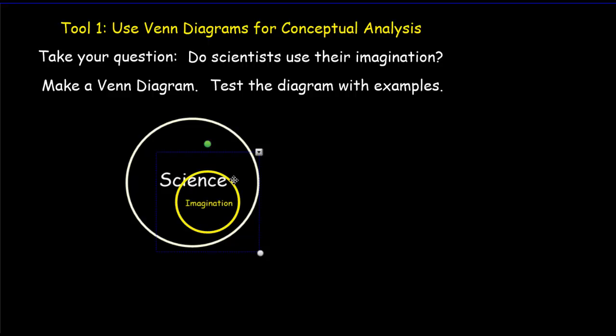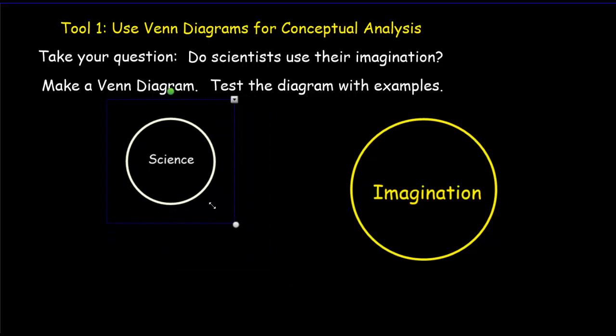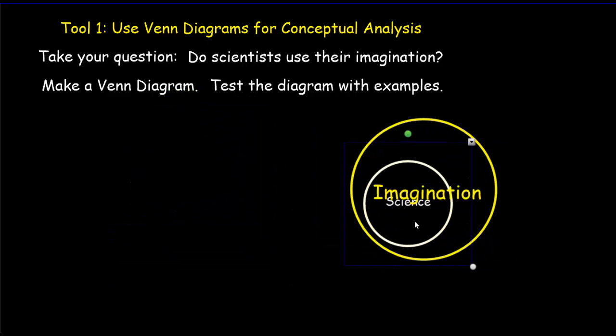Now, we might go the other way and put the science circle inside the imagination circle, which is to say that all of science is imagination, which would almost be saying that everything is imagination. Now, that certainly doesn't sit with my usual definition of imagination. So I don't think that's true.